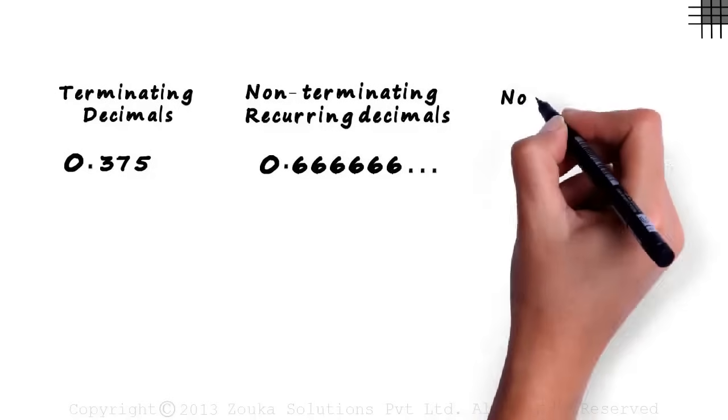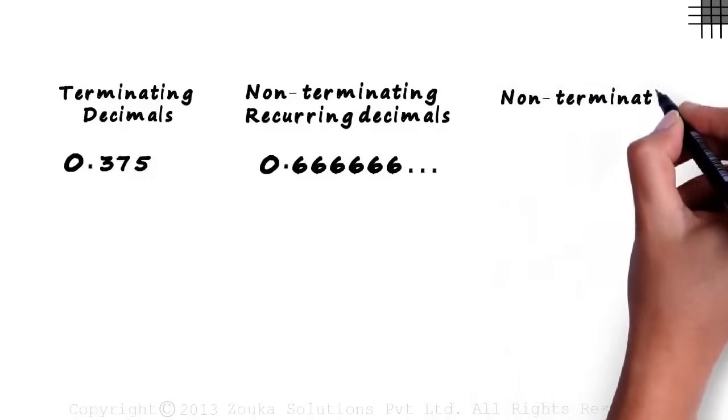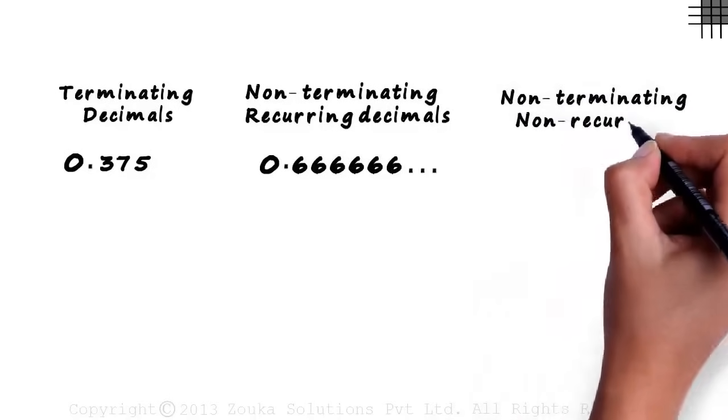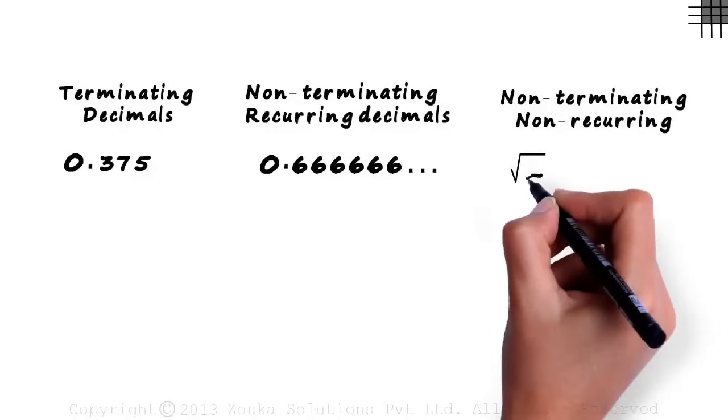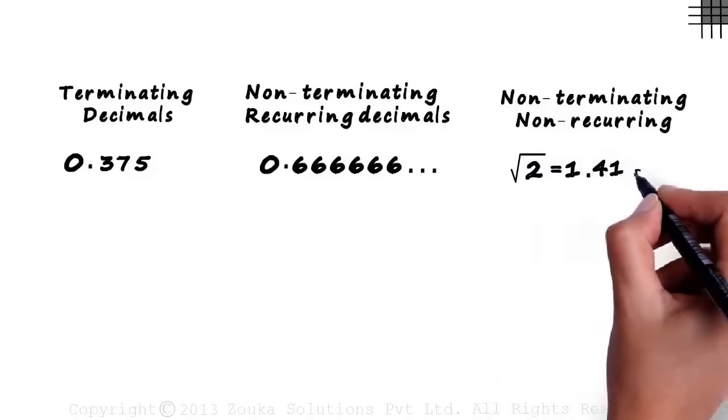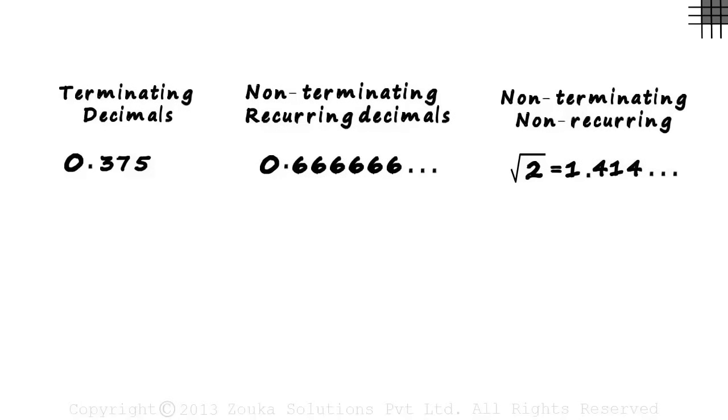And the third type is non-terminating non-recurring decimals. We just saw an example of this type: root two. It approximately equals one point four one four two. And the digits after the decimal do not end, hence it's called non-terminating. It's called non-recurring since there's no specific pattern of reoccurrence.